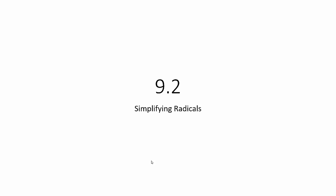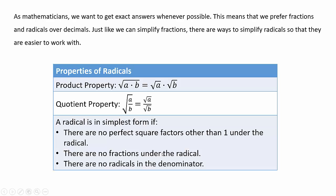In this video we're going to look at simplifying radicals. The reason we're looking at simplifying radicals is because as mathematicians we want to get exact answers whenever possible, and exact answers does not mean decimals — exact answers means that we prefer to get fractions and square roots over decimals.